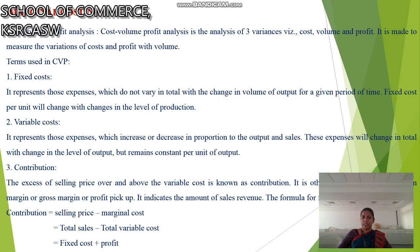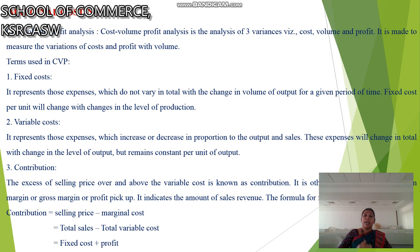The first one is fixed cost. It represents those expenses which do not vary in total with the change in volume of output for a given period of time. Fixed cost per unit will change with changes in the level of production. Next is variable cost, which represents those expenses which increase or decrease in proportion to the output or sales.